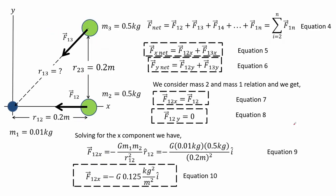From equation 4 we need to obtain the net forces along x and along y, as shown by equations 5 and 6. We begin with the interaction between mass 1 and mass 2. We see that mass 2, with respect to mass 1, is aligned with the Cartesian coordinate system along the x-axis.